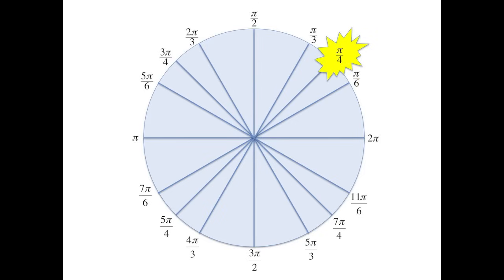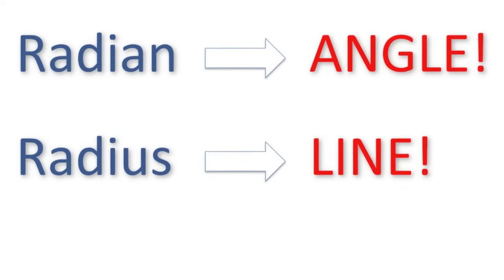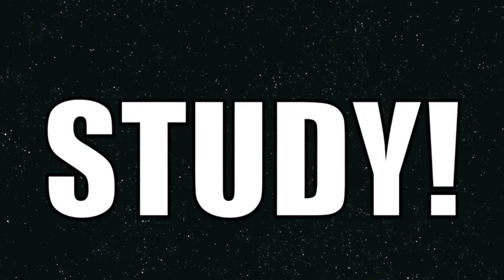Think it goes like π over 6, π over 4, π over 3, π over 2, 2π over 3, 3π over 4, 5π over 6, π. A radian's an angle and a radius is a line, and if you study every day you'll do just fine.